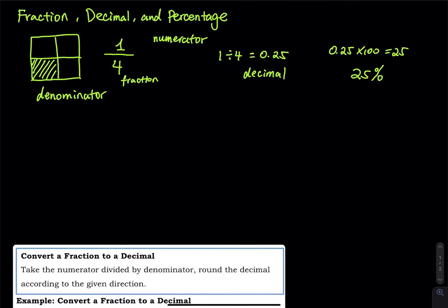The concept is like you have a one dollar bill and you want to divide it into four quarters. You take one of the quarters. Since you have four quarters and you grab one, that means you grab one out of four quarters. And how much is a quarter worth? A quarter is worth 25 cents. So 25 cents is 25%, which is a quarter of a one dollar bill.